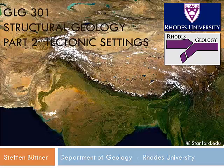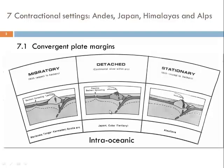Ladies and gentlemen, welcome to chapter 7 of our course. In chapter 7 we are going to subdivide into two sections. In the first section we are going to talk about convergent plate margins with subduction zone settings. In the second part we are going to talk about continent-continent collision.